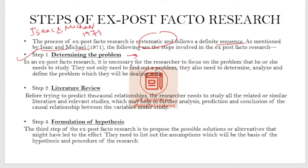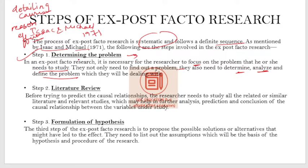Step one is the statement of the problem. The researcher needs to know, focus on, determine, analyze, and define the problem they are dealing with. This includes identifying what the problem was, what the causes of that problem are, and what the effects will be on the present and future. Step two is review of literature. Before trying to predict the causal relationship, the researcher needs to study all the related and similar literature which may help in further analysis, prediction, and conclusion.